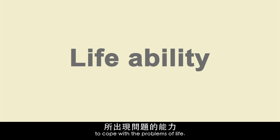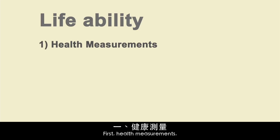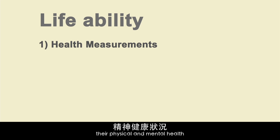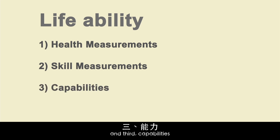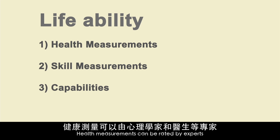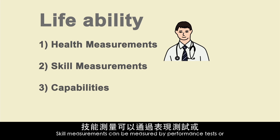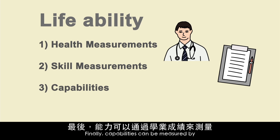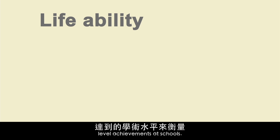The top right quadrant denotes inner life chances — that is, how well we are equipped to cope with the problems of life. Lifeability can be measured in three major aspects: first, health measurements, which directly relate to how well a person is in terms of physical and mental health; second, skill measurements, which serve selection within education and at work; and third, capabilities, which are measured with achievements in school or at work. Health measurements can be rated by both experts such as psychologists and doctors, or by self-reports. Skill measurements can be measured by performance tests or self-reports of emotional intelligence. Capabilities can be measured by school success such as years of schooling or level of achievement.